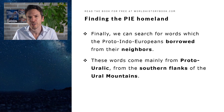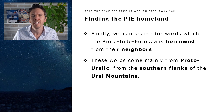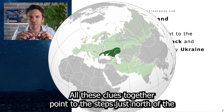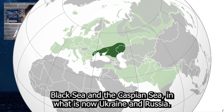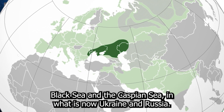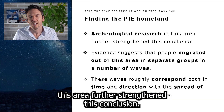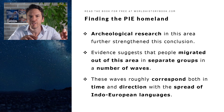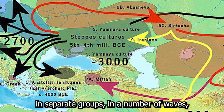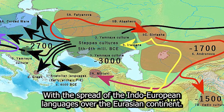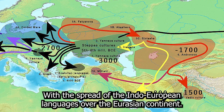Finally, we can search for words which the Proto-Indo-Europeans borrowed from their neighbors. These words come mainly from Proto-Euralic, from the southern flanks of the Ural Mountains in mid-Russia. All these clues together point to the steppes just north of the Black Sea and the Caspian Sea, in what is now Ukraine and Russia. Archaeological research in this area further strengthened this conclusion. Evidence suggests that people migrated out of this area in separate groups in a number of waves, and these waves roughly correspond both in time and direction with the spread of the Indo-European languages over the Eurasian continent.